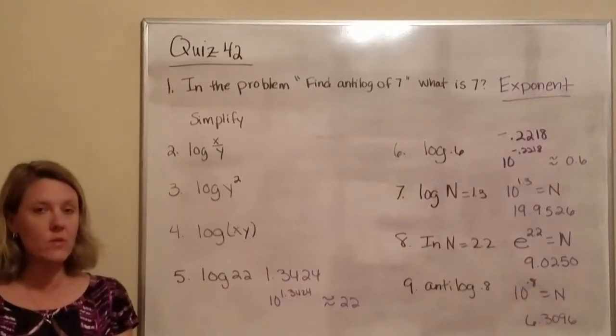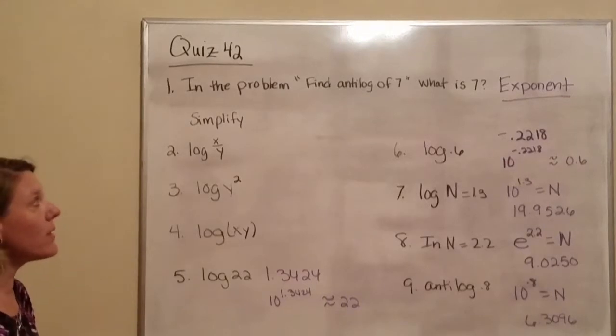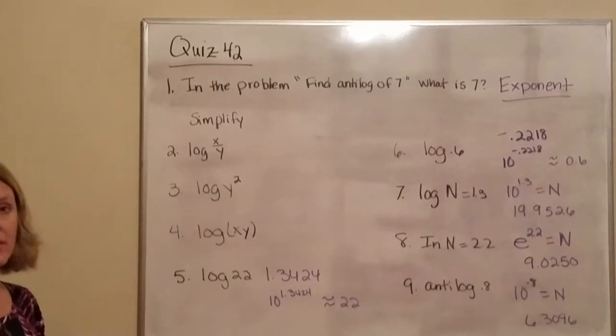Welcome to Algebra 2 quiz 42. In the problem find antilog of 7, what is 7?